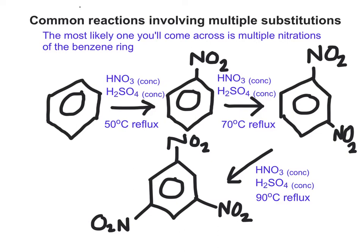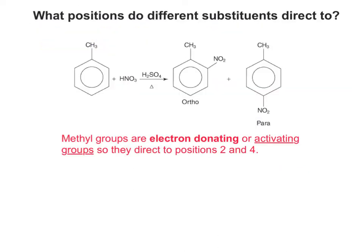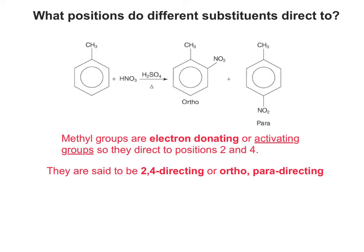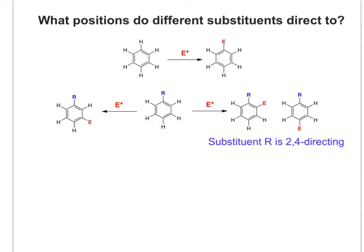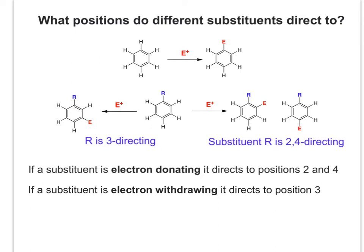Methyl groups are electron-donating, or activating groups, so they direct to positions 2 and 4 - they are said to be 2,4-directing or ortho-para directing. So in the diagram, substituent R would be 2,4-directing. But if R had a different identity and were electron-withdrawing, it would be 3-directing. Remember you can count either way to ensure the lowest number, so position 3 could be in two places, just like position 2 could be in two places.